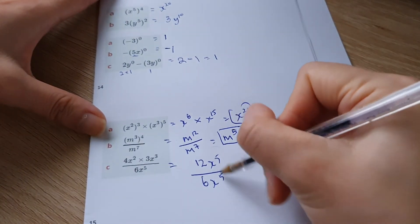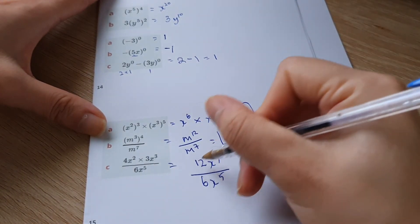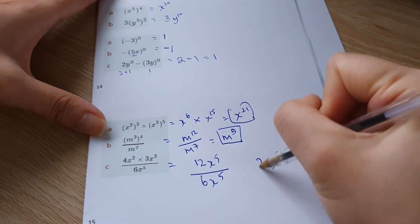What we do here is we're going to subtract. So five take five is going to give us zero. So that's going to be x to the power of zero. And 12 divided by six is going to be two.